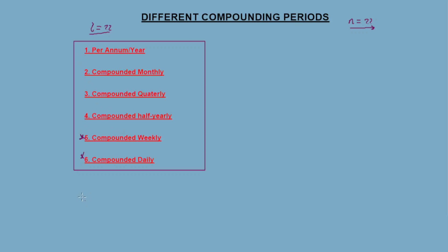Number one is per annum yearly. Then compounded monthly, compounded quarterly, compounded half yearly, compounded weekly, and compounded daily.